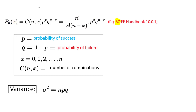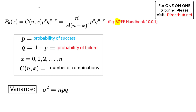The probability depends on both the probability of success and the probability of failure. On the FE exam, when you have situations where you either have success or failure — those are the only two cases — you know you're going to use binomial distribution.